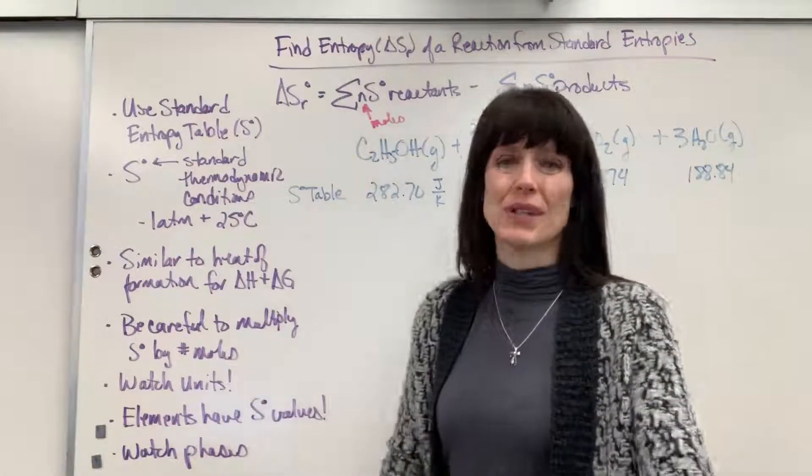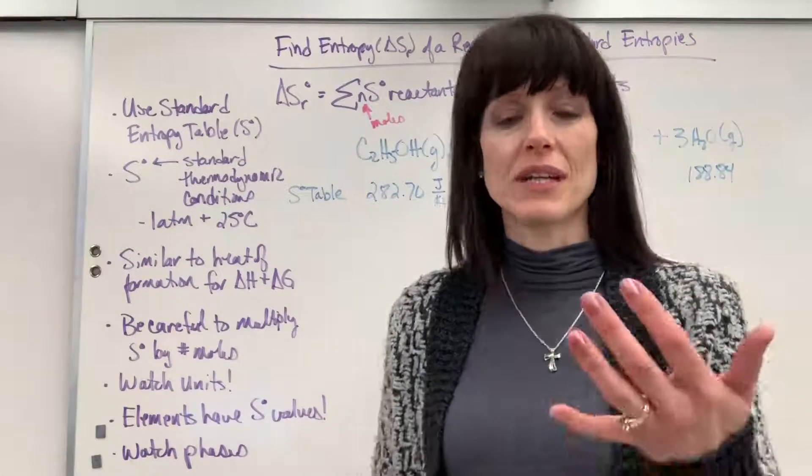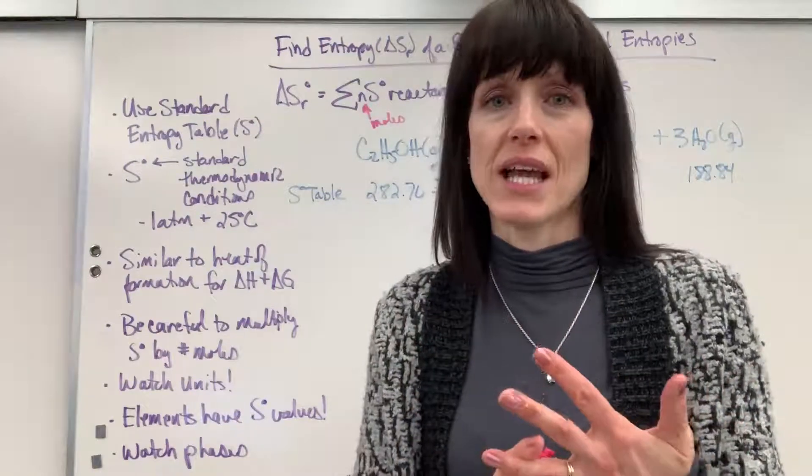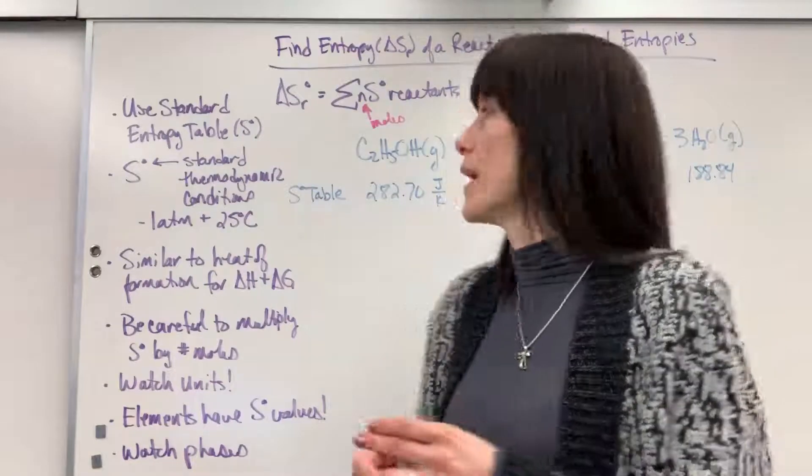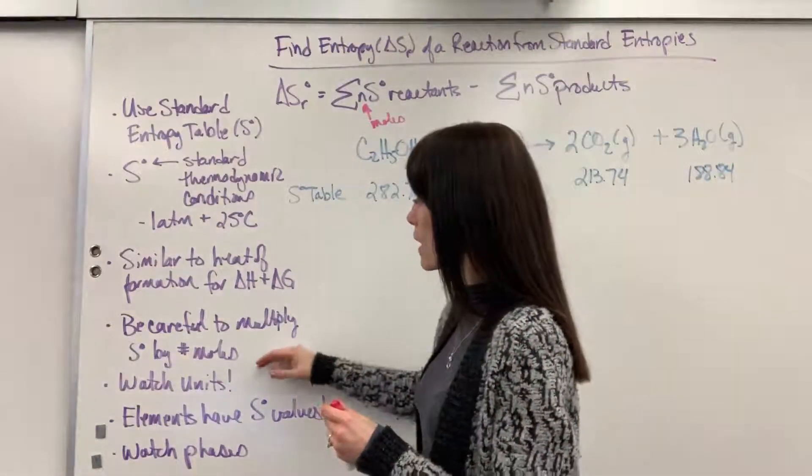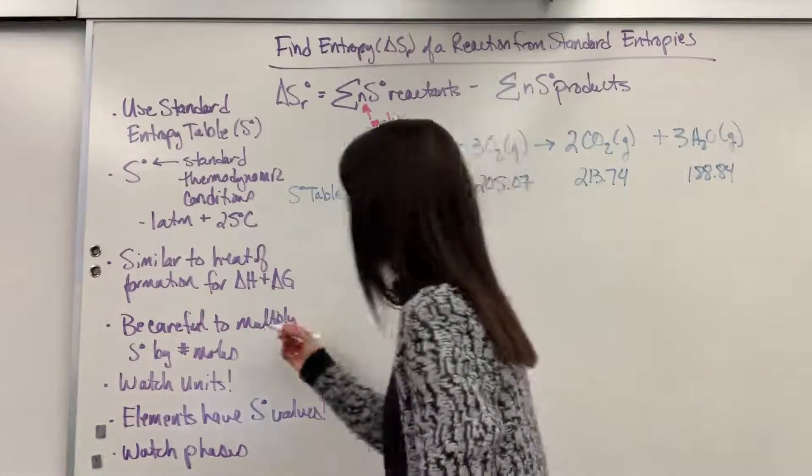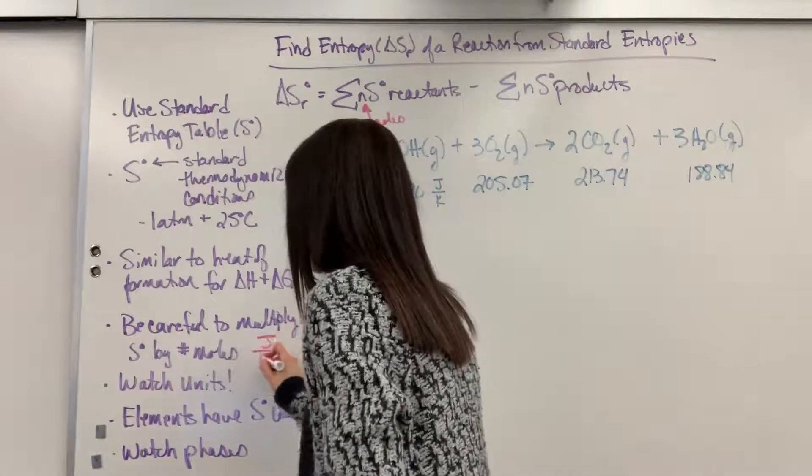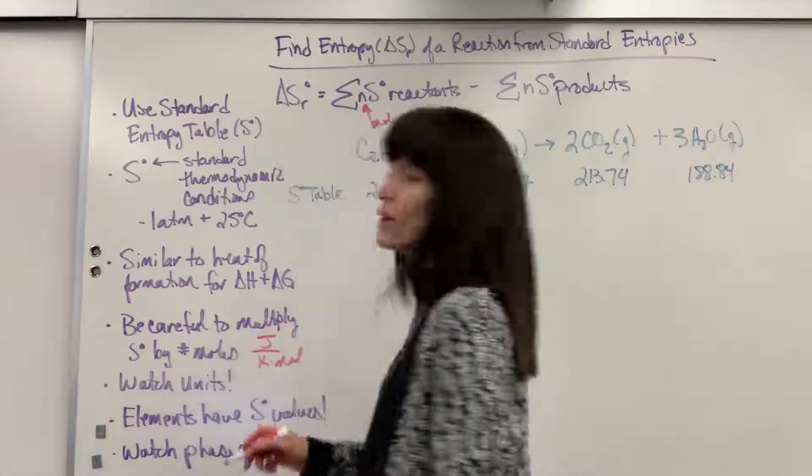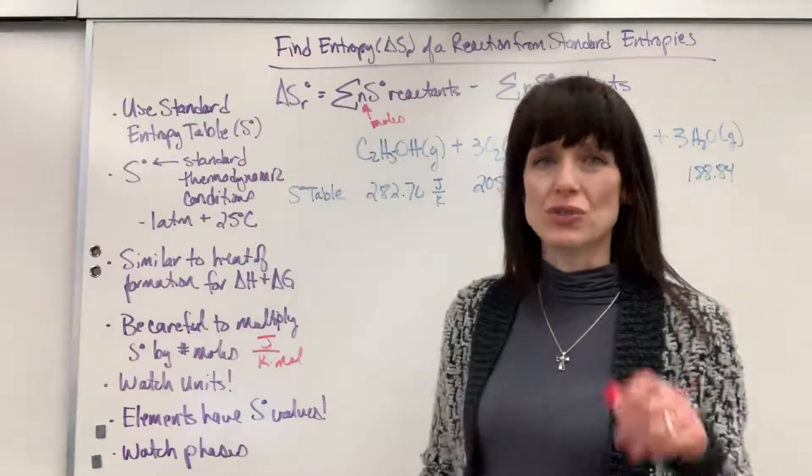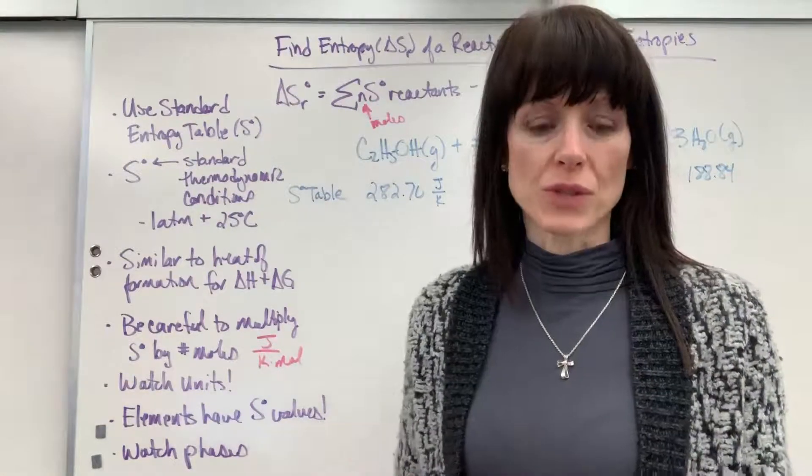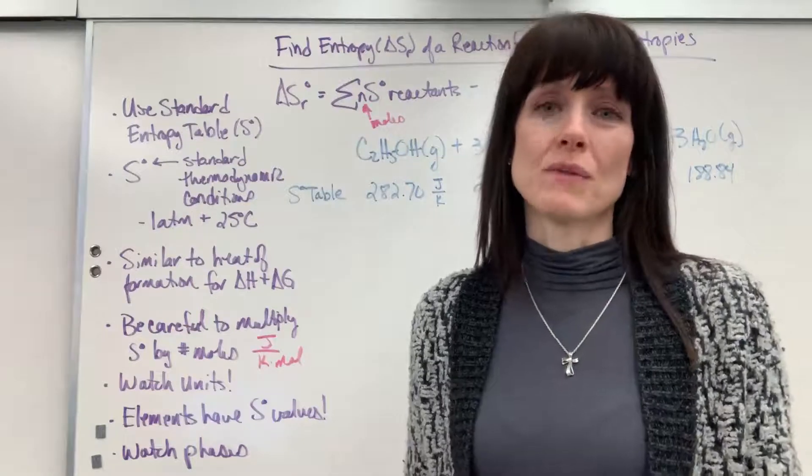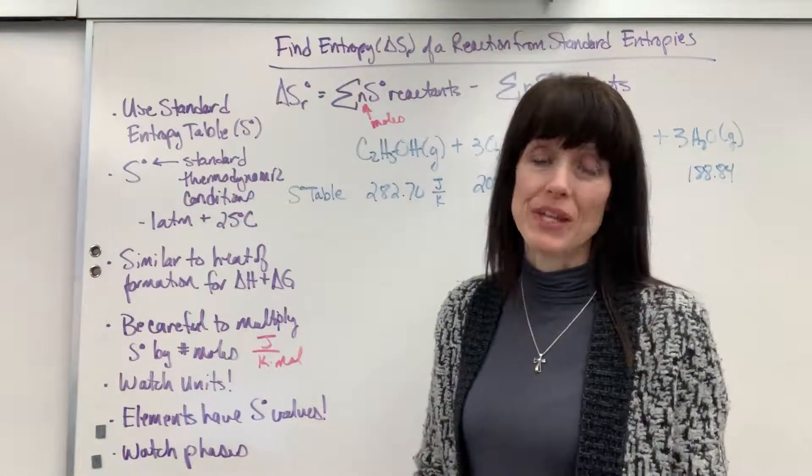Also, watch the units. When you look at a table, this one that I showed you, it gives delta G, delta H, and S. Well, delta G and delta H are in kilojoules per mole, whereas our S is in joules per Kelvin times mole. So be really careful, it's in joules, not kilojoules. And that's going to become really important when you have to use these tables to do Gibbs free energy. So I just want to point that out. Be aware of the unit.